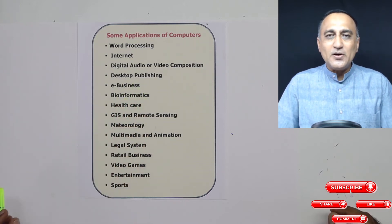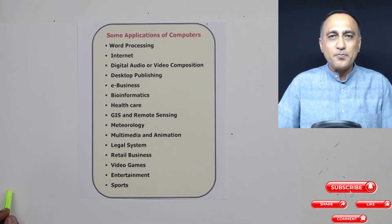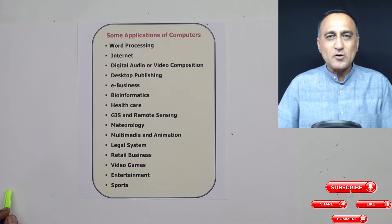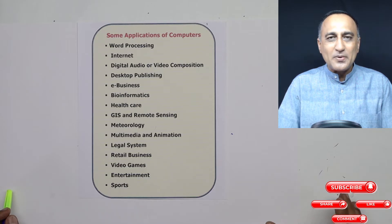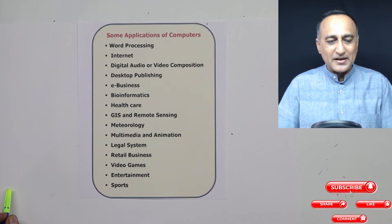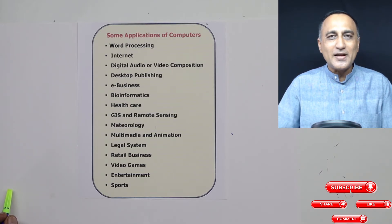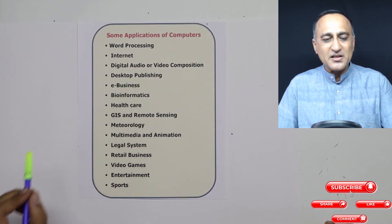Desktop publishing stands for DTP. When you're generating magazines or newspapers, before you even print the first copy, you need to actually type it into a computer and put it in proper spacing. That master copy is then given for printing. So all the different fonts, the different images, the different styles, the decoration in the pages of the newspapers — you will see all that being done through desktop publishing technology.